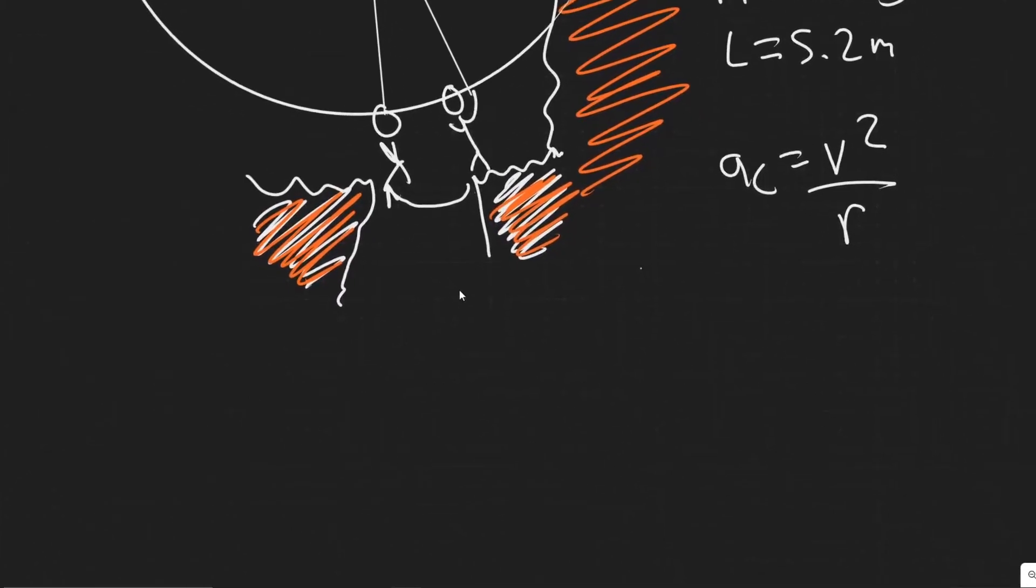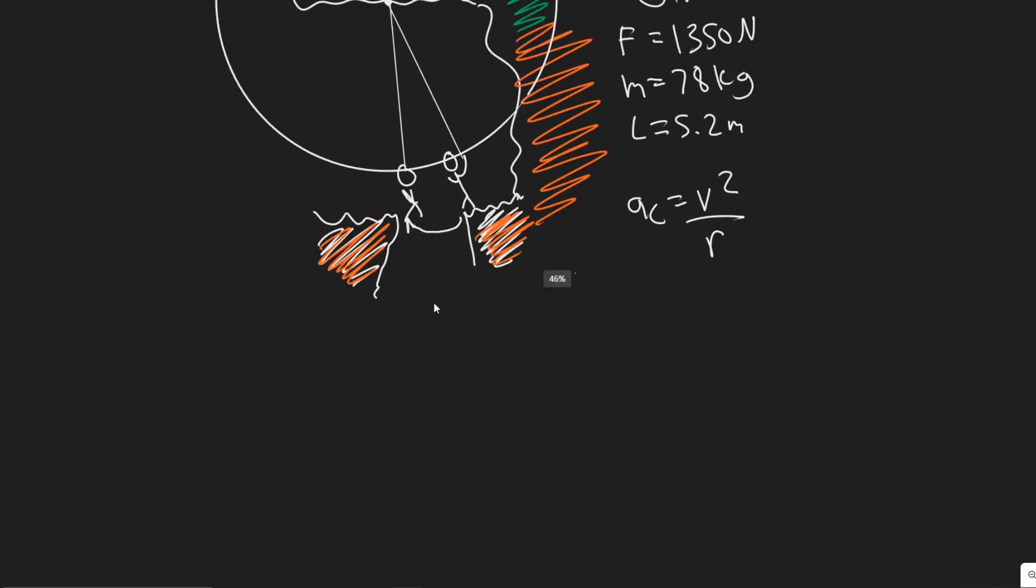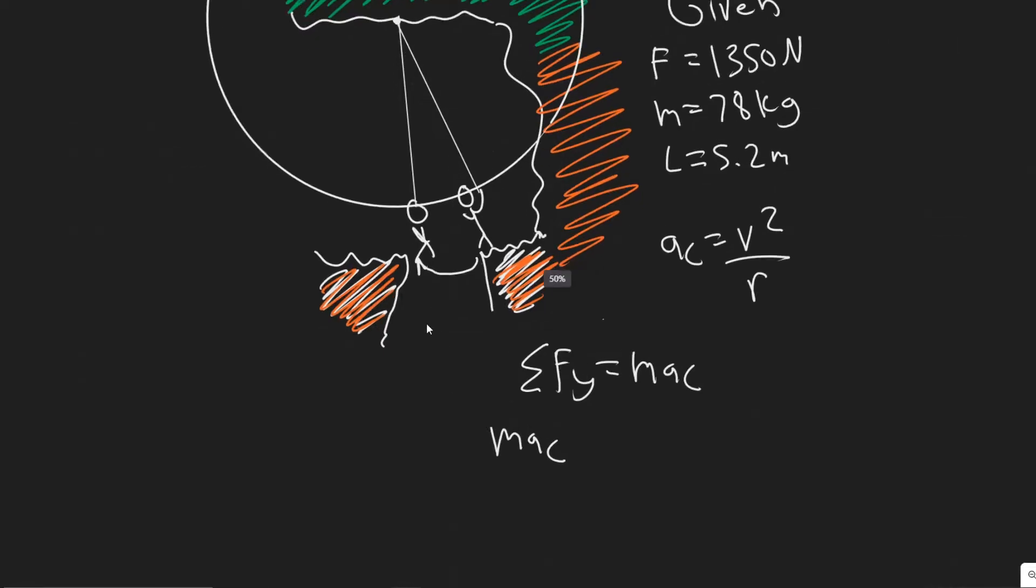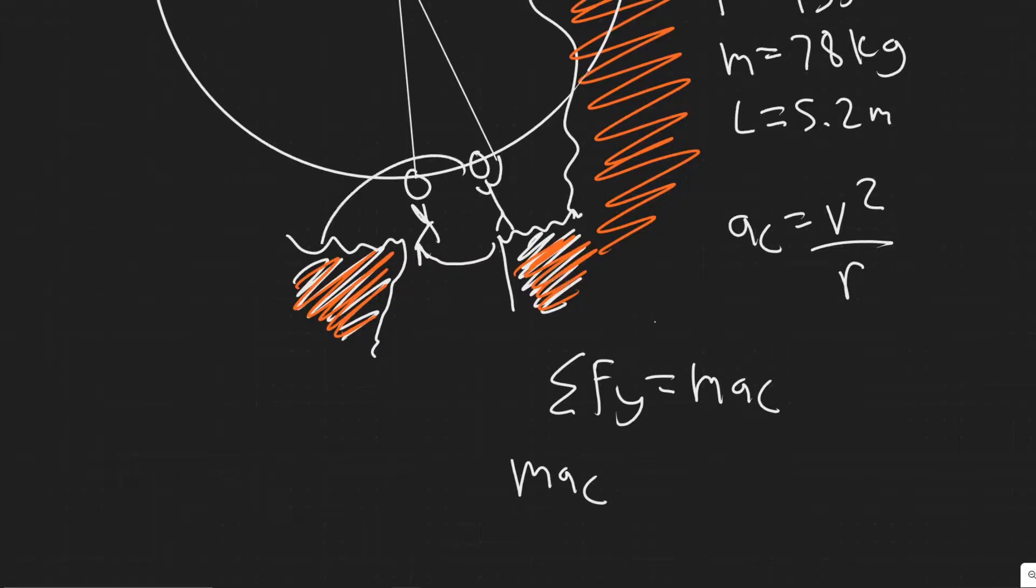We know the sum of the forces, and I'm going to call this the y direction. So sum of the forces in the y are going to be equal to m times a_c. It's mass times centripetal acceleration because he's moving in a circle. And then we want to sum up the forces, but let's draw them first. We know there's going to be the force of gravity, which acts straight down on him. And that's why we're doing it at the lowest point, because it's just easier to do. Essentially, gravity is going to be acting down on him.